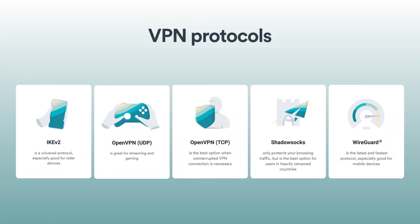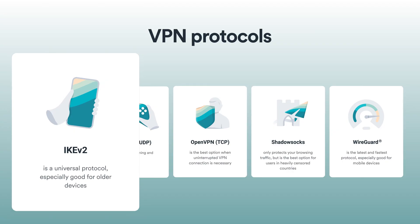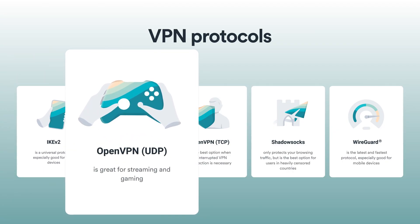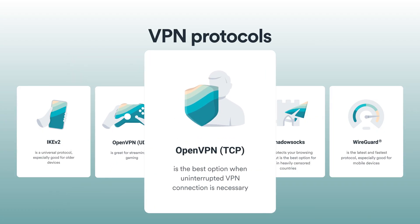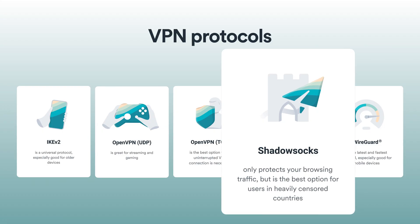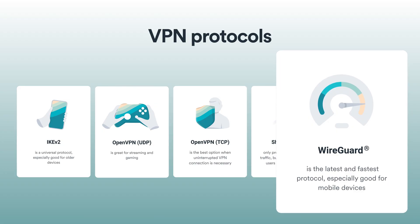When trying out different protocols, think about this: IKEv2 is a universal protocol, especially good for older devices. OpenVPN UDP is great for streaming and gaming, while OpenVPN TCP is the best option when an uninterrupted VPN connection is necessary. Shadowsocks will protect only your browsing activity, but it's the best option for countries with internet restrictions. WireGuard is the latest protocol — it's very fast and especially good for mobile devices.